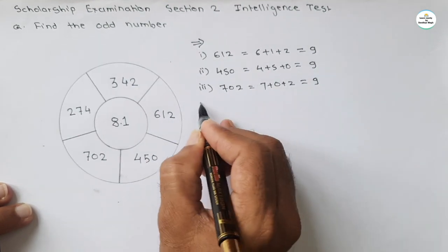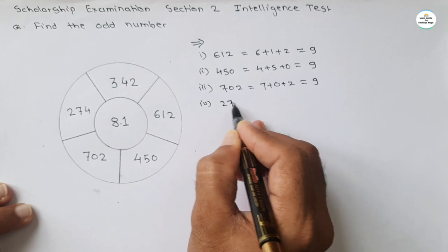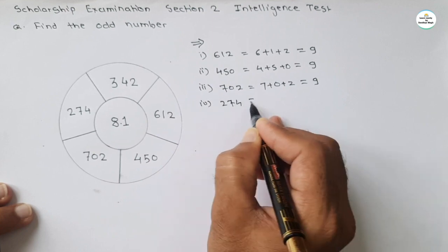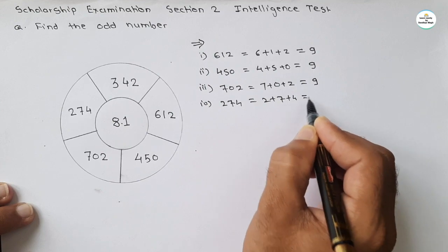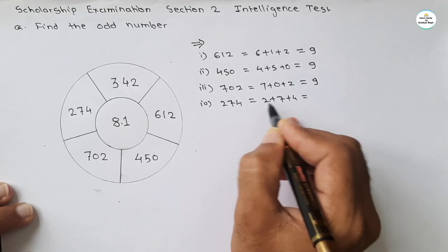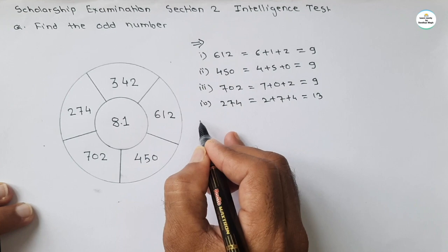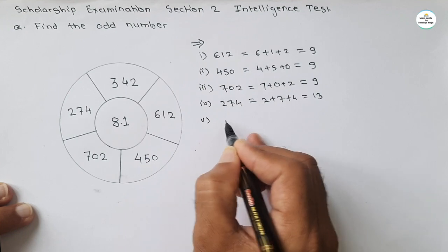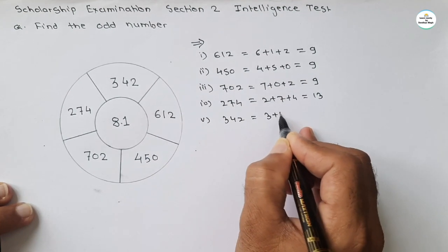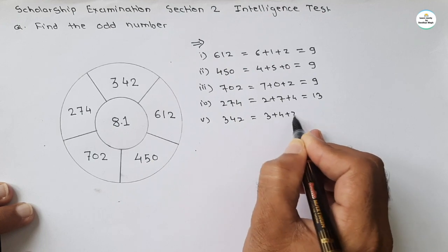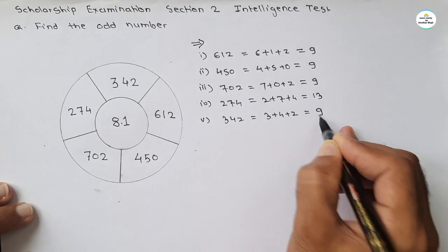The third number, 702: 7 plus 0 plus 2 equals 9 again. Similarly, the fourth number, 274: 2 plus 7 plus 4 — that is 7 plus 2 equals 9, plus 4 equals 13. Here the sum is not 9.